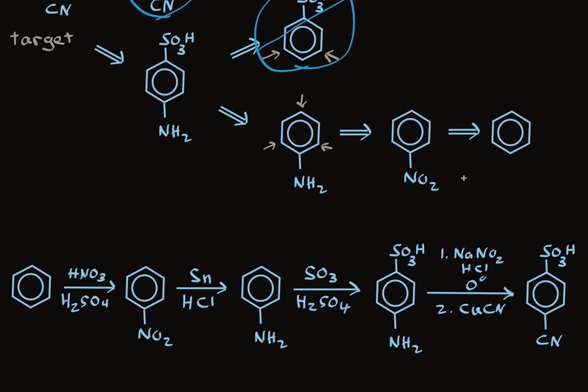Here's the complete synthesis: nitric acid and sulfuric acid nitrate the aromatic ring to make nitrobenzene from benzene. We'll reduce the NO2 group using Sn and HCl to make aniline. Using SO3 and sulfuric acid attaches the benzene sulfonic acid group to the ring. Then we use nitrous acid to diazotize the molecule, and cuprous cyanide to put the nitrile group on. Using diazonium salts is a powerful way to put substituents on a ring, and using the retrosynthetic analysis planning approach is the best way to plan a synthesis to take advantage of diazonium chemistry.